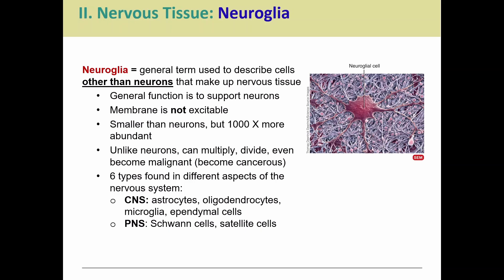Neurons don't necessarily divide; however, neuroglia do. They do multiply, they do divide, and they sometimes can even become malignant or cancerous. So certain cancers — when we think brain cancer — in some cases we're talking about neuroglia.